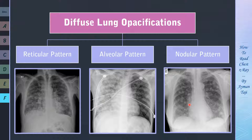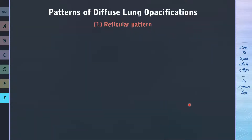Although our course is about chest X-ray, in diffuse opacities CT scan becomes very important. We'll often need a CT after the X-ray to identify the pattern more clearly and therefore narrow the differential diagnosis. Don't worry about how you'll differentiate them all, as we'll talk about each one separately. Now we'll start with reticular pattern diseases.